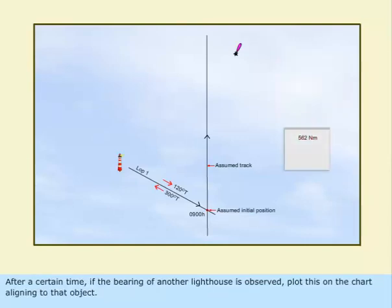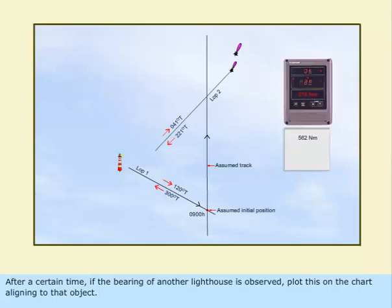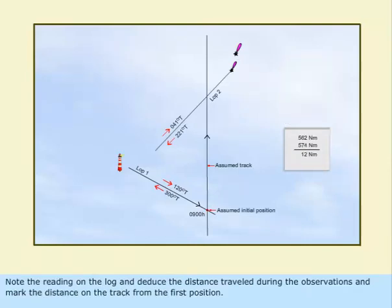After a certain time, if the bearing of another lighthouse is observed, plot this on the chart aligning to that object. Note the reading on the log and deduce the distance traveled during the observations, and mark the distance on the track from the first position.